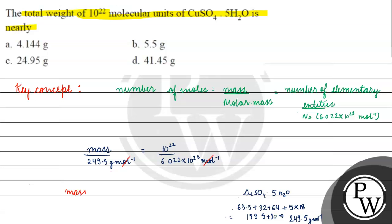The total mass will equal 249.5 × 10^22 divided by 6.022 × 10^23. This becomes 249.5 divided by 60.22.